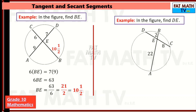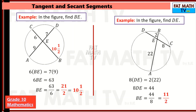Another example: BE is 2, EA is 22, CE is 8. What is DE? So 2 times 22 divided by 8 gives 44 over 8. Dividing numerator and denominator by 4 gives 11 over 2, or 5 and a half, or 5.5. DE is 5.5 units.